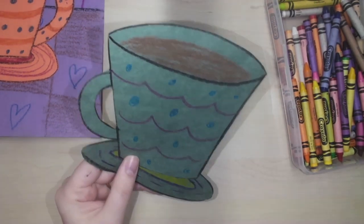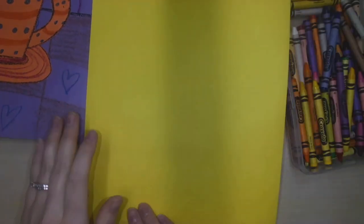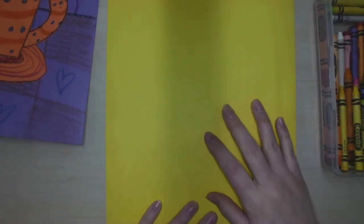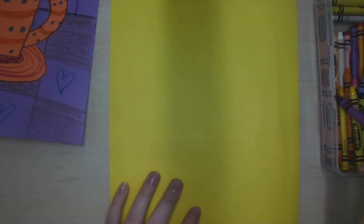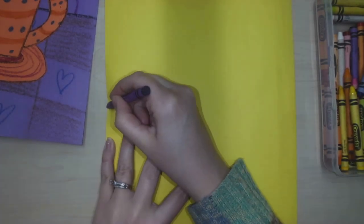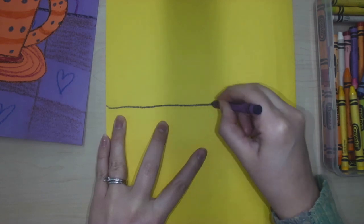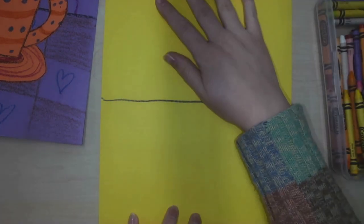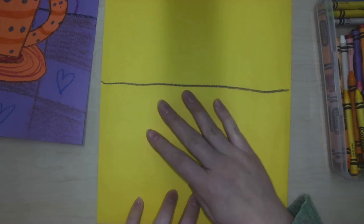Once we're done with the patterns on our mug, we can create the patterns on our background. You'll have a big piece of paper next and the first thing we need to do is divide it in half with a line. We're going to create the wall pattern in the background and the table pattern in the foreground.